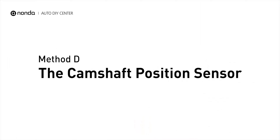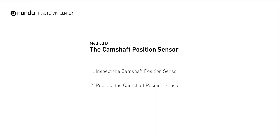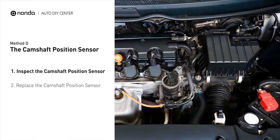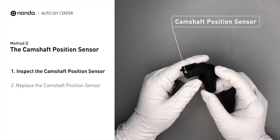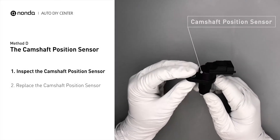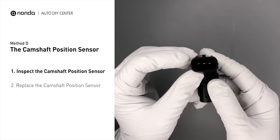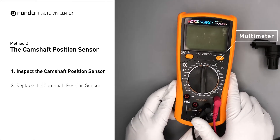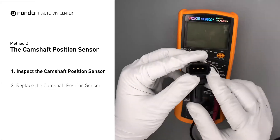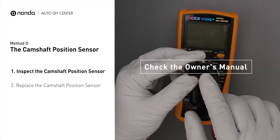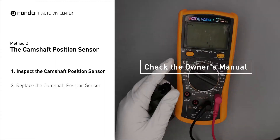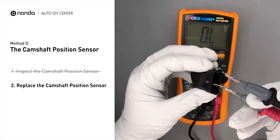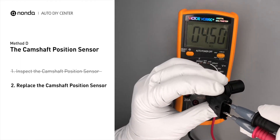Method D: the crankshaft position sensor. The crankshaft position sensor is most often located on the front underside of the engine and can usually be found mounted to the timing cover. First, carefully remove the crankshaft position sensor from the vehicle. Visually inspect the sensor to make sure it hasn't been contaminated by a leak from another engine component. Use a multimeter to proceed with a resistance test on the crankshaft position sensor. Check your owner's manual to see the specific crankshaft position sensor resistance range for your vehicle. If you don't get a reading, this indicates that the crankshaft position sensor is faulty and needs to be replaced.